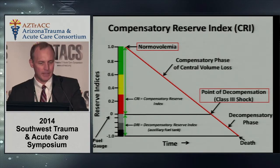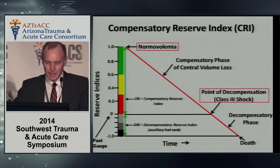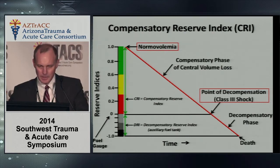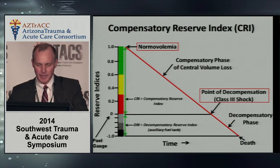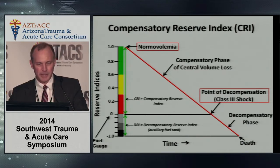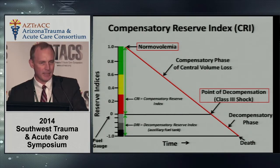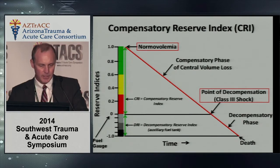The compensatory phase of central volume loss extends from normal volemia to decompensation or class III shock. The algorithm calculates an individual-specific beat-to-beat composite measure of compensation by monitoring a select group of waveform features that trend the compensatory phase of central volume loss. We call this algorithm the Compensatory Reserve Index, or CRI. We like to think of CRI as a fuel gauge, where a CRI of 1 indicates replete central volume — a full tank — and a CRI of 0 indicates the tank is empty, reaching the point of decompensation. Values between 1 and 0 indicate the compensatory reserve of the individual.